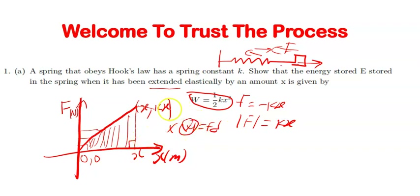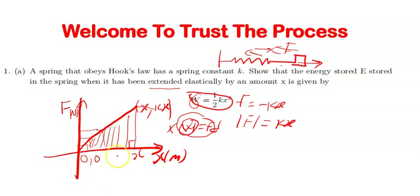There is a relationship between the work done by the spring and the energy stored — they are practically the same. So W here represents the work done, and all you need to do is find the work done by this force. Since the force is not constant, instead you find the work done in small intervals as the force changes, then add them all up. This gives us two approaches to tackle this question.